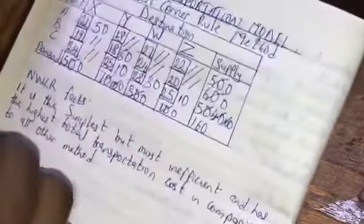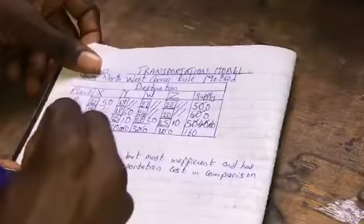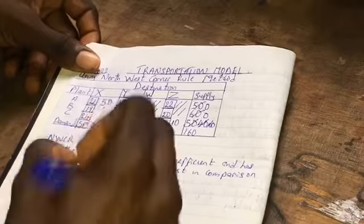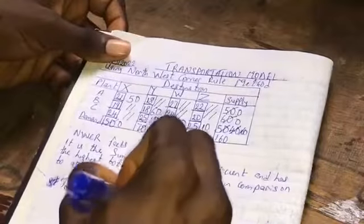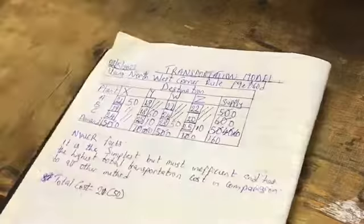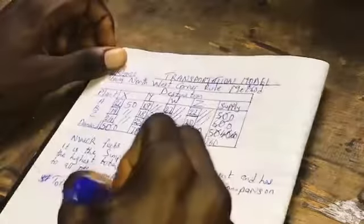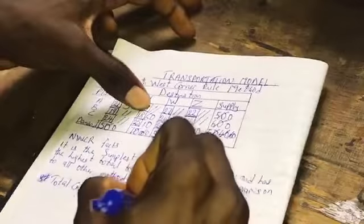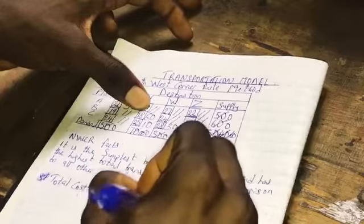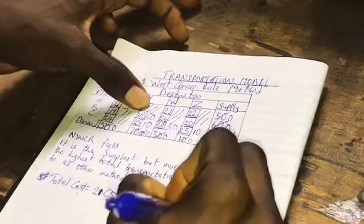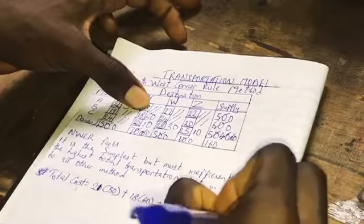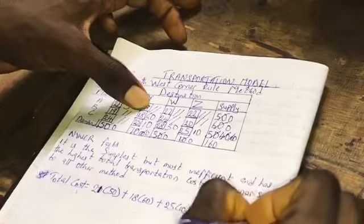Therefore you look for the total cost. The calculation includes the values allocated in the cells multiplied by their costs: plus 18 in bracket 60, plus 25 in brackets 10, plus 38 in brackets 30, plus 25 in brackets 10.